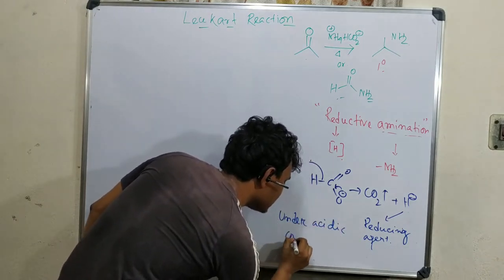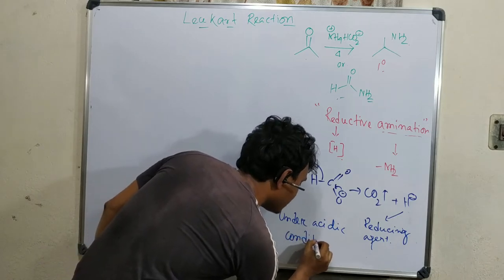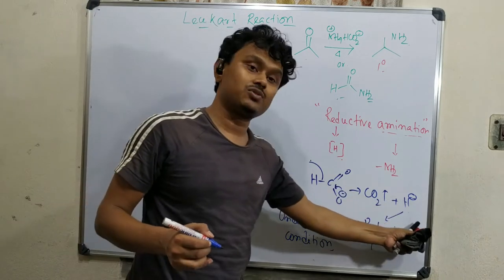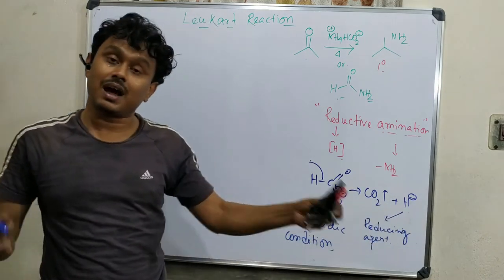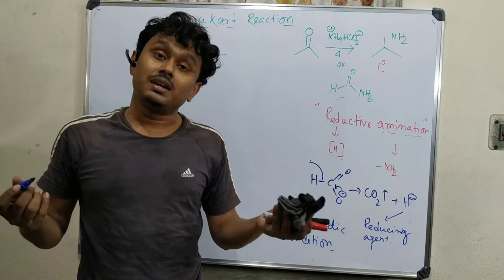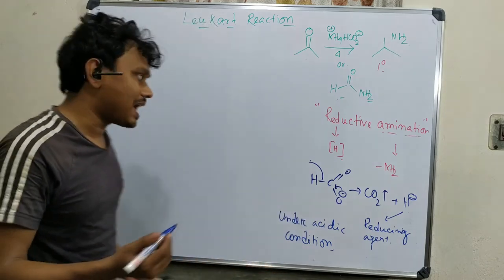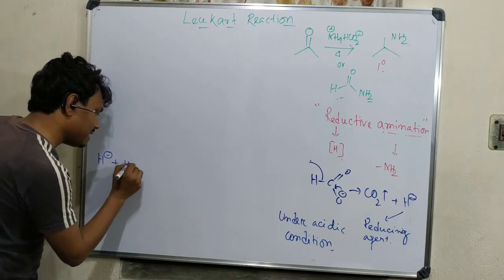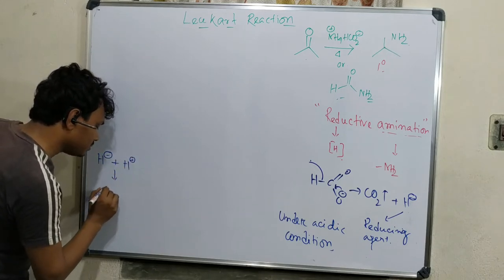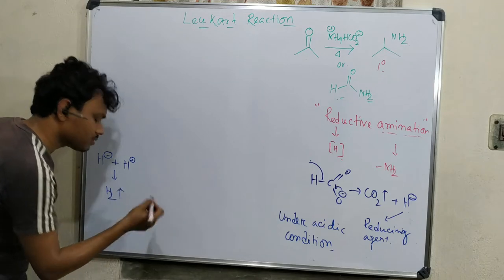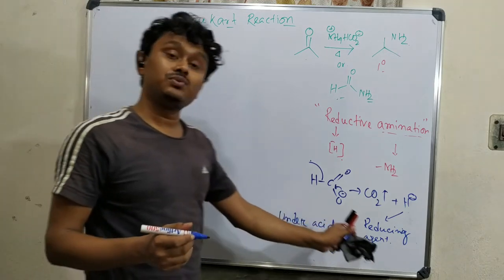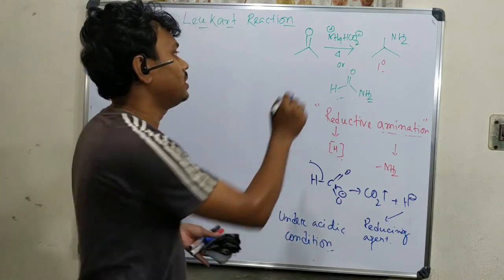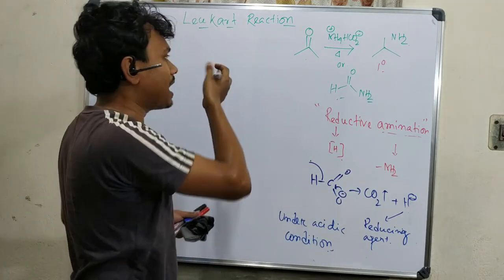This elimination of carbon dioxide is the main driving force for such reactions where formic acid derivatives are utilized. It generates hydride. Keep in mind that this hydride generation or reduction is under acidic condition - this reductive amination is under acidic condition. This is the uniqueness of this reduction.